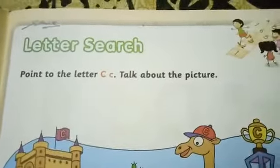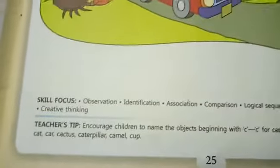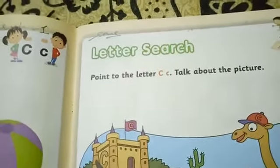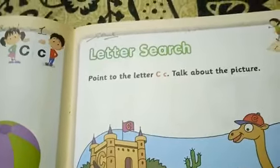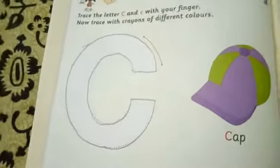Your chapter number is 11 and page number 25, and the name is Letter Search — capital C and small c. In our previous video, in chapter number 10, we learnt to write letter C and we completed the tracing part also.